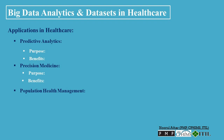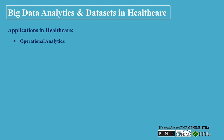Population Health Management — Purpose: to analyze health and demographic data to improve health outcomes at a population level. Benefits: aids in developing targeted healthcare programs, policies, and interventions. Operational Analytics — Purpose: to optimize healthcare operations, resource allocation, and patient flow. Benefits: improves efficiency, reduces wait times, and enhances patient satisfaction.